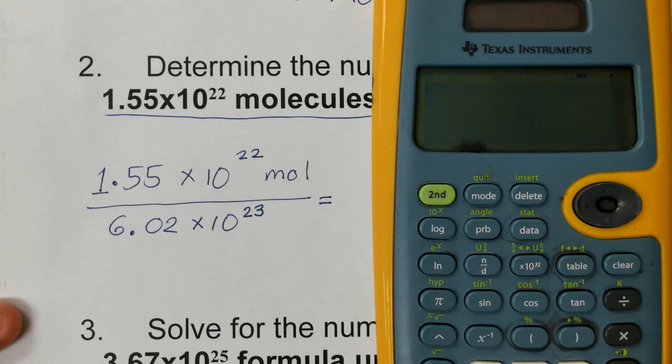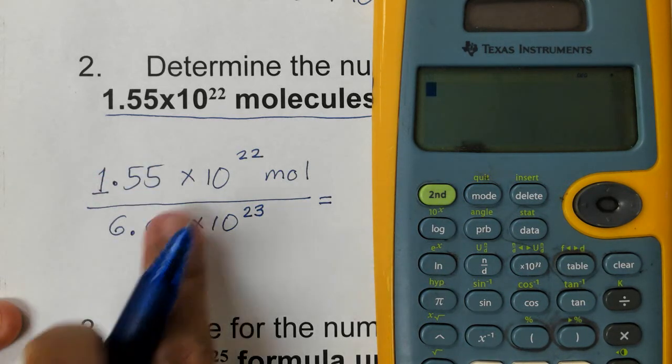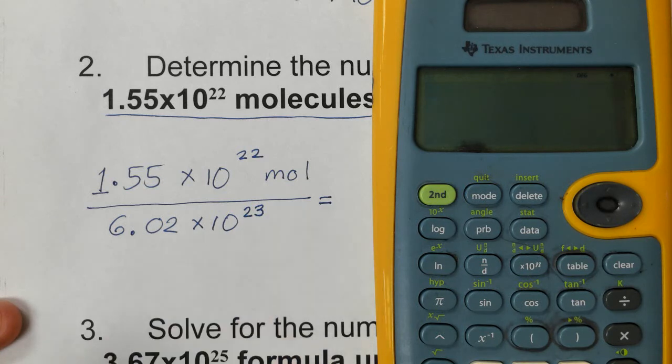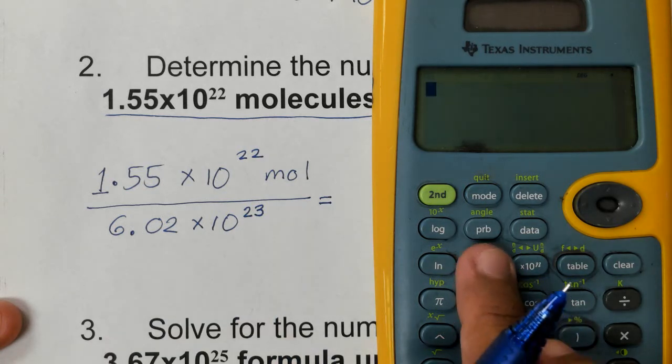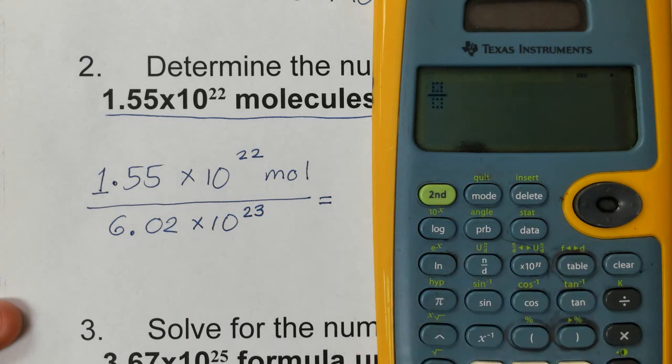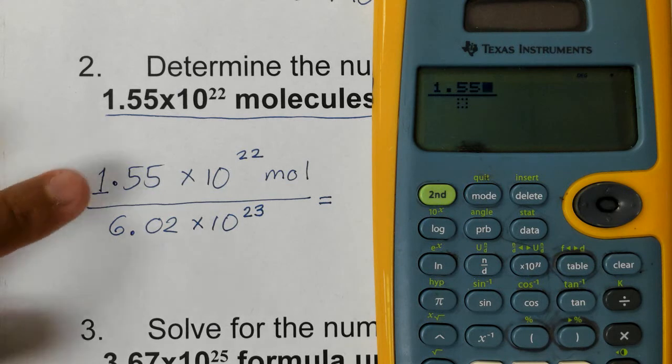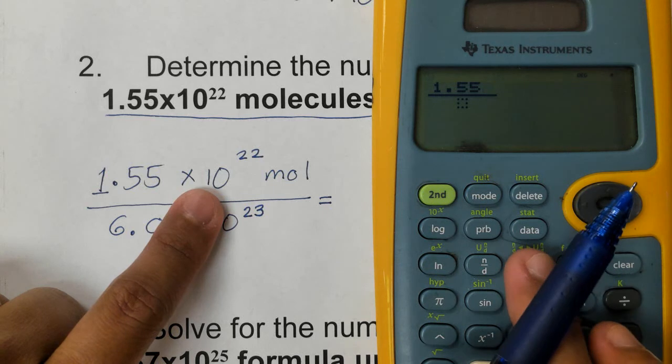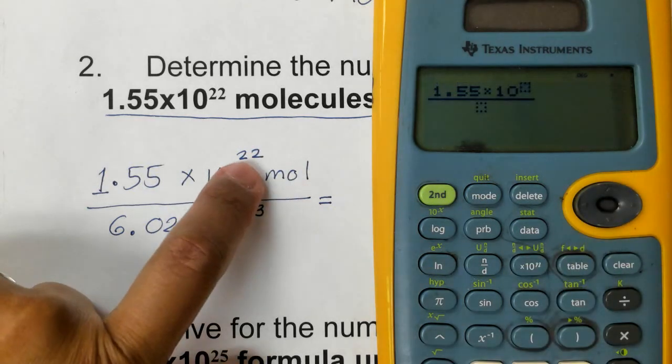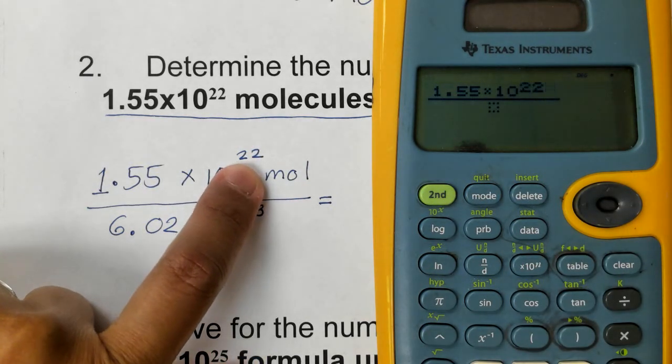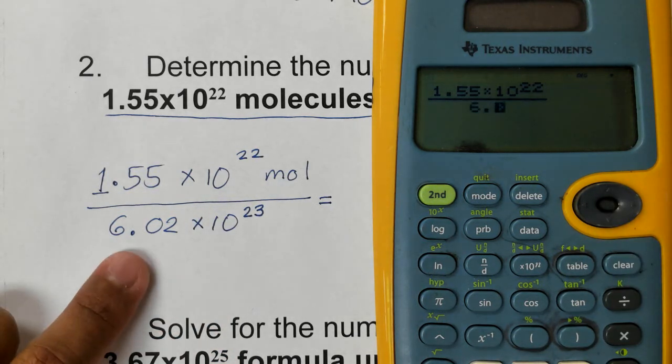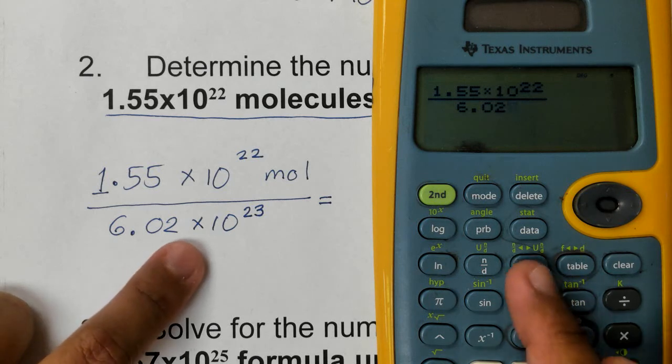I don't know what type of calculator you're using, but please figure it out as early as now how to divide this scientific notation format that we have. So let's go ahead, press our n over d, the one in fraction, and then we're going to input the numerator. So that's 1.55, and then the times 10 will be this bottom here, times 10 to the n, and then the exponent is 22. And then we're going to press arrow down. That's going to be 6.02, and then times 10 to the power of n again, and the exponent is 23.